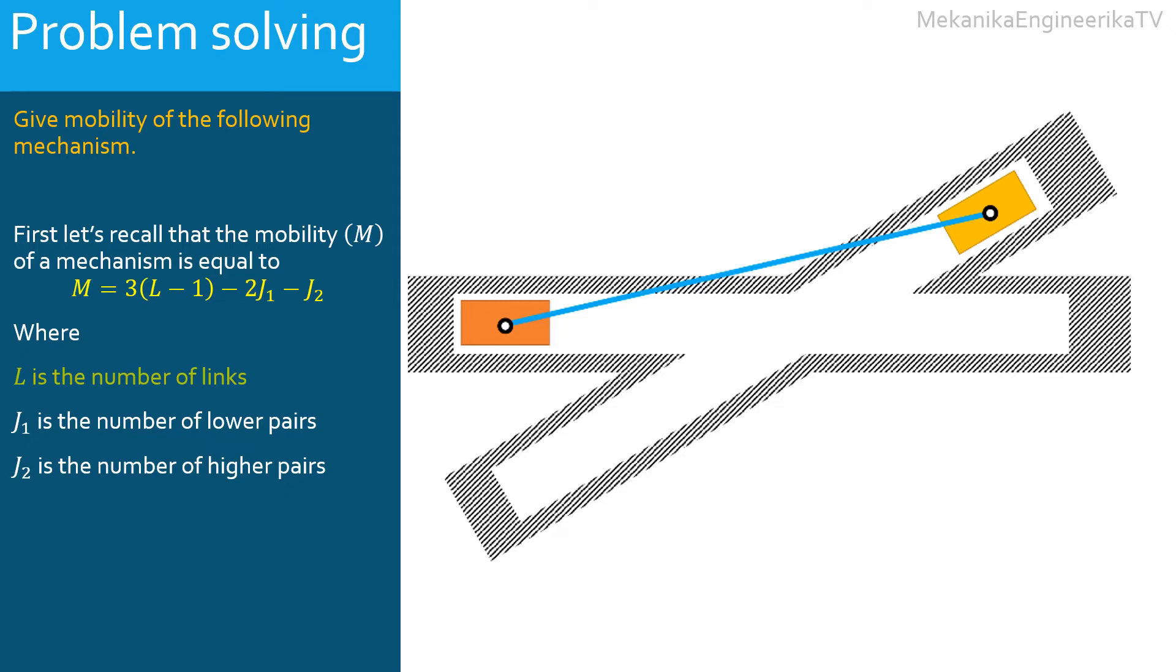Here the mechanism is made of 4 links: the ground, 1 bar, and 2 sliders. Thus, L is equal to 4.